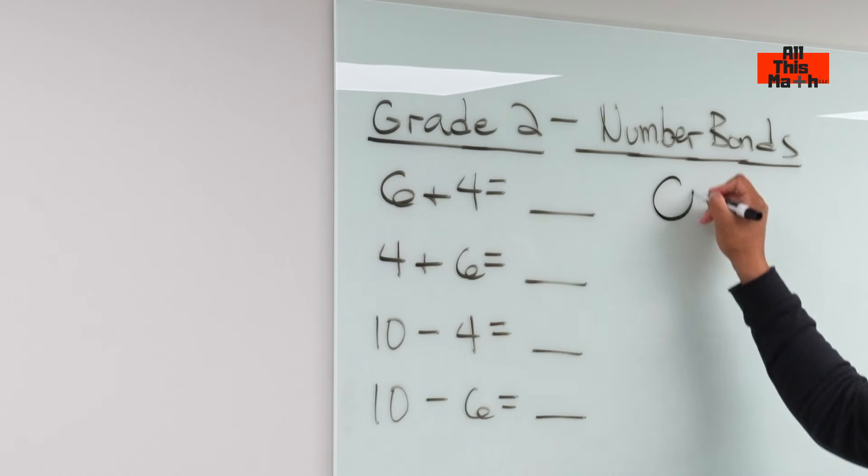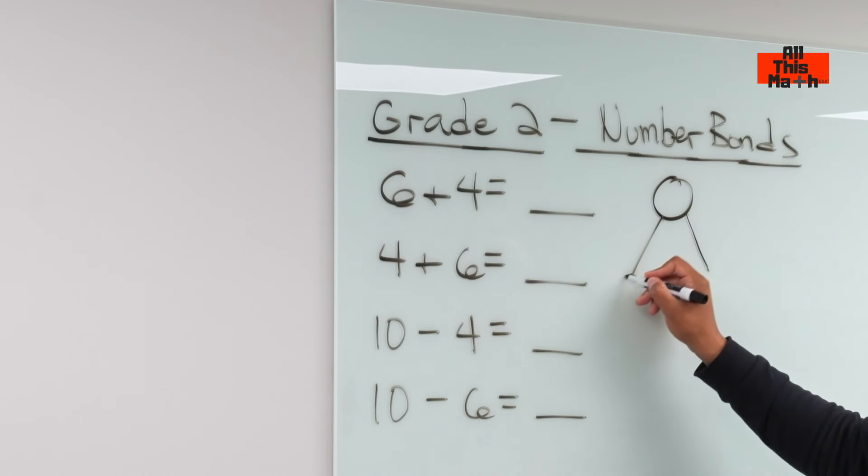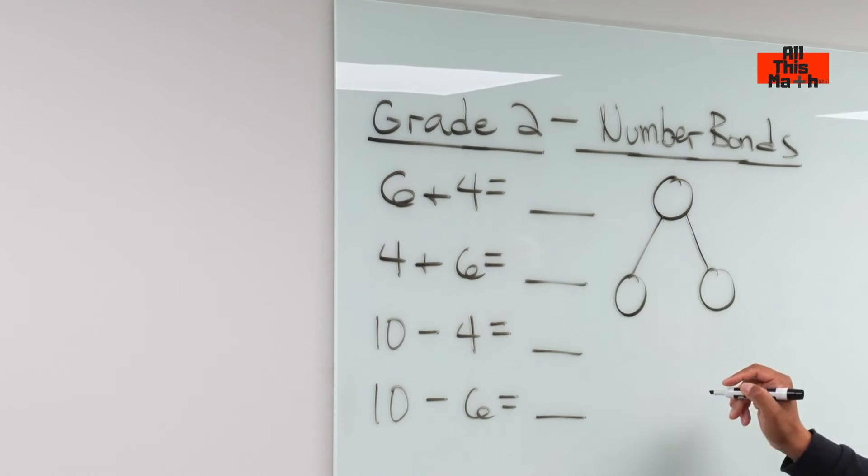So we set up a number bond like this, one circle and two lines and then two other circles like this.